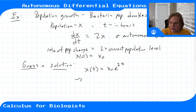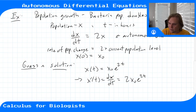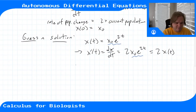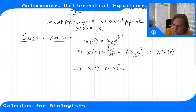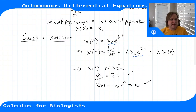If we say that's our solution x(t), then x'(t) or dx/dt by the chain rule is 2x₀ e^(2t) — because the derivative of the exponential is the exponential and then the two comes down — which equals 2x(t). So I found a function x(t) that satisfies the differential equation dx/dt = 2x, because when I took its derivative I got two times the original function. And at t=0, x(0) = x₀ e^0 = x₀, so it satisfies both conditions. It is indeed a solution, found by guessing and checking.